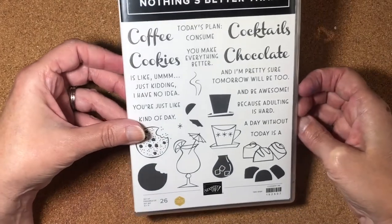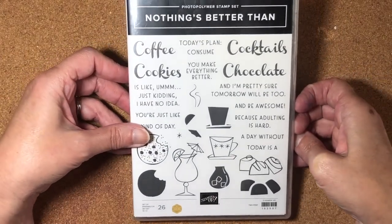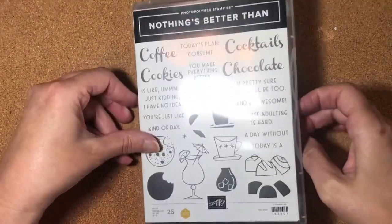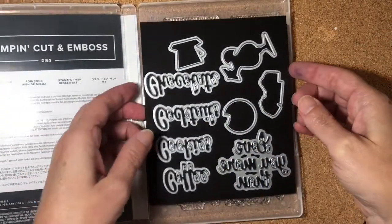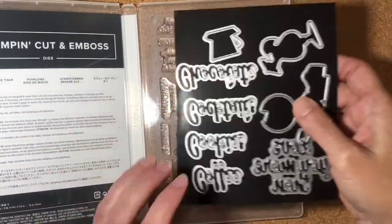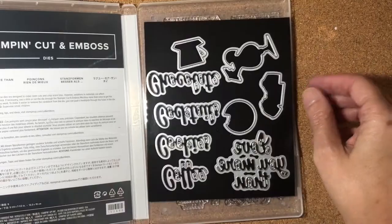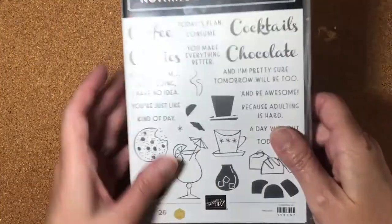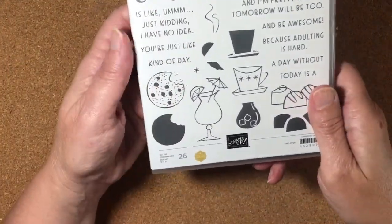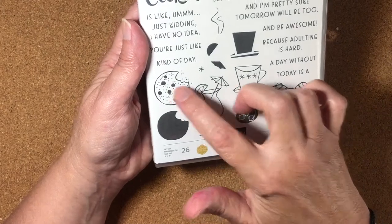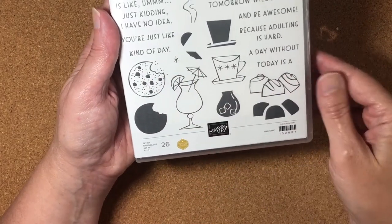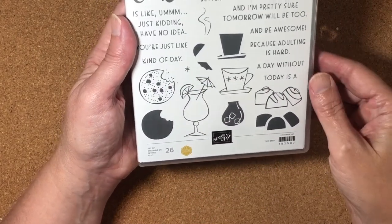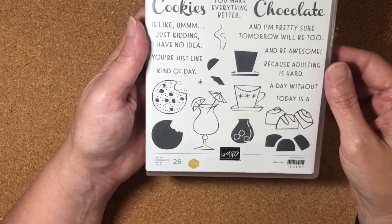This is a photopolymer stamp set. You all know how much I love photopolymer, and you can get it in a bundle with coordinating dies, and you do save 10% whenever you order the bundle. I love this stamp set. It has some adorable little images of the cookie, cocktail, coffee cup, and chocolate, which are great for the hinge step stamping technique.